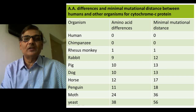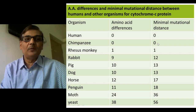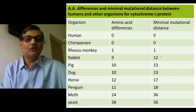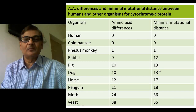The minimal mutational distance is also shown in the table. Between human and chimpanzee, no nucleotide difference or mutational difference exists. For a monkey, a single minimal mutational distance is there, then 12, then 13. As I mentioned, if you consider distantly related organisms, we expect and we find more mutational differences.